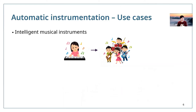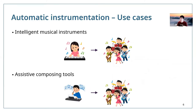There are two use cases for automatic instrumentation. First, just like keyboard zoning, we could apply it to intelligent musical instruments — as the musician plays on their keyboard, rather than hearing a single instrument, we could have it played by a format. The other use case is applying it to assistive composing tools, where a composer first writes a solo piece on piano or guitar and then arranges it to the target ensemble.